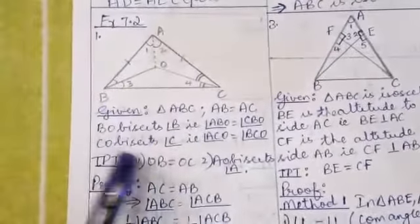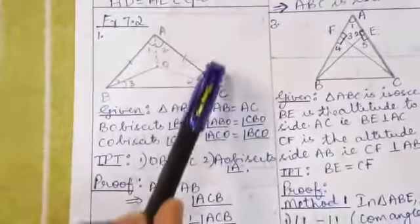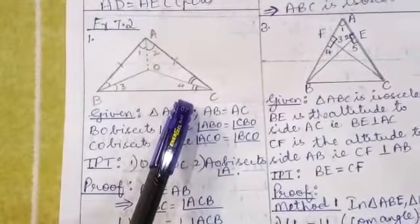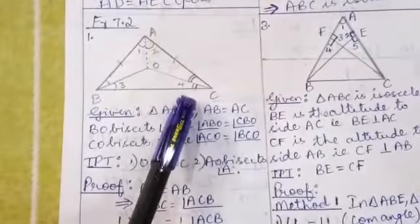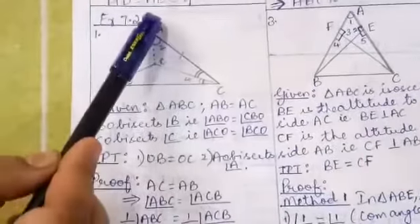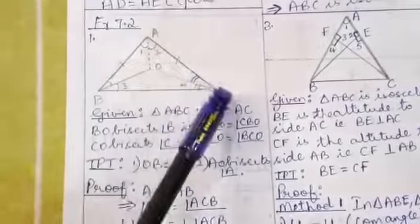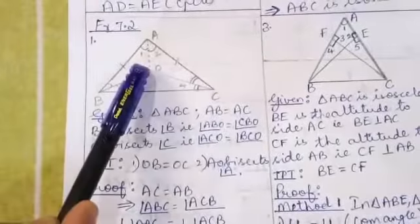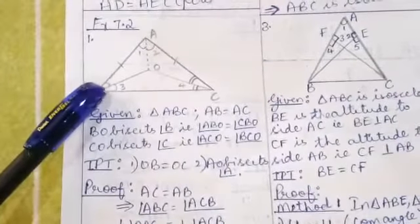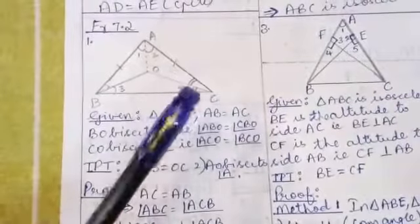CO bisects angle C, which means angle C is divided into two equal angles: ACO and angle BCO. I have marked the equal angles in both cases.